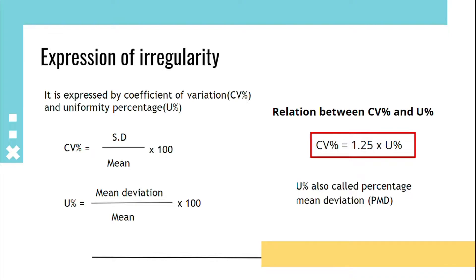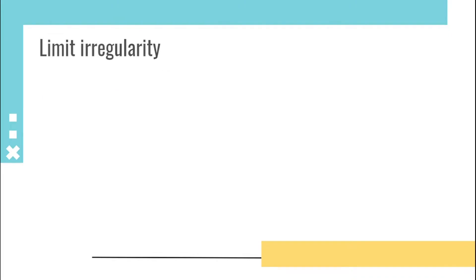Limit irregularity: For the most uniform strand of material produced by the machine, that is sliver, roving, or yarn, where fiber ends are laid in a random order, there will still be an irregularity that is expressed as limit irregularity. That is V_r² = 100²/N + V_m²/N.